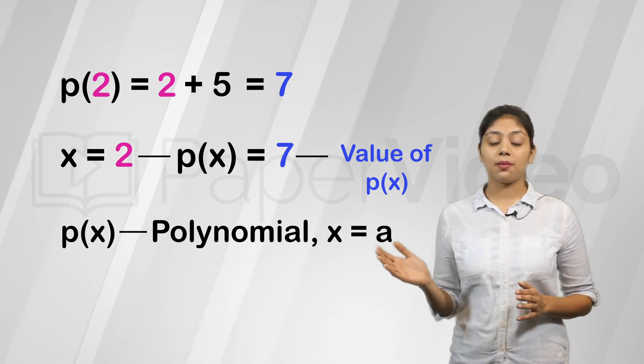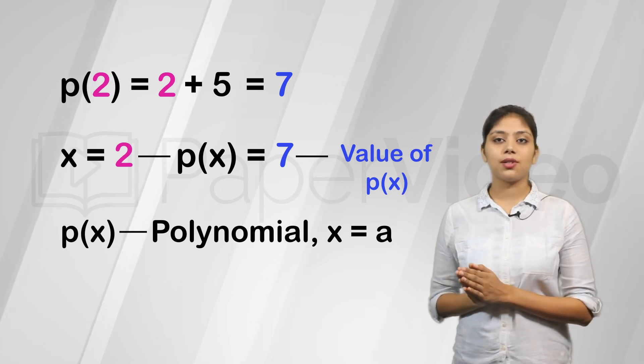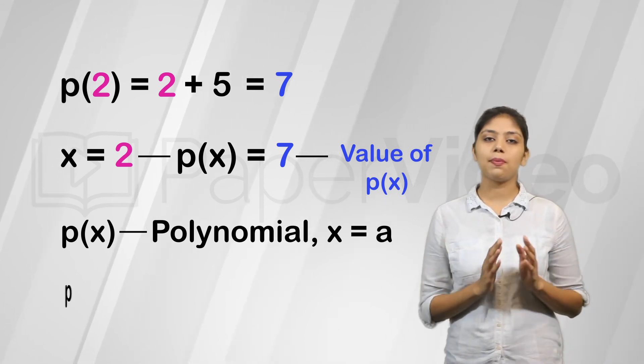Therefore, if p of x is a polynomial in x, then the value of the polynomial for x equals a is written as p of a. This is known as value of a polynomial.